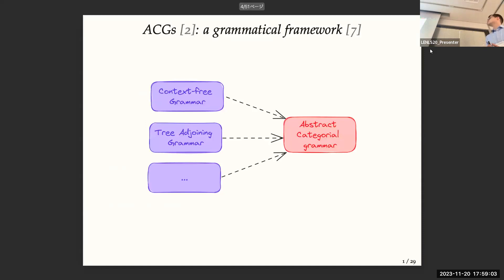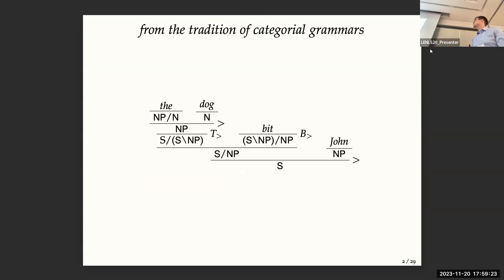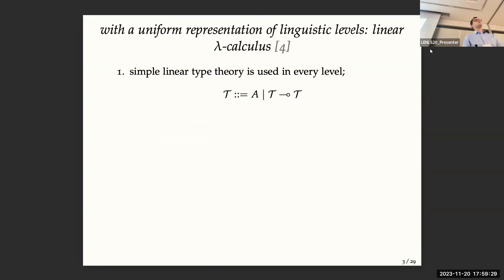So what is an ACG? It's a grammatical framework which is able to encode context-free grammar, but also mainly context-sensitive grammar, such as tree-adjoining grammar and also linear rewriting systems. It's from the tradition of categorial grammars, except that we use a uniform representation of linguistic levels. We use linear lambda calculus, so we have a simple linear type theory with a basic set of atomic types and a linear functional type.